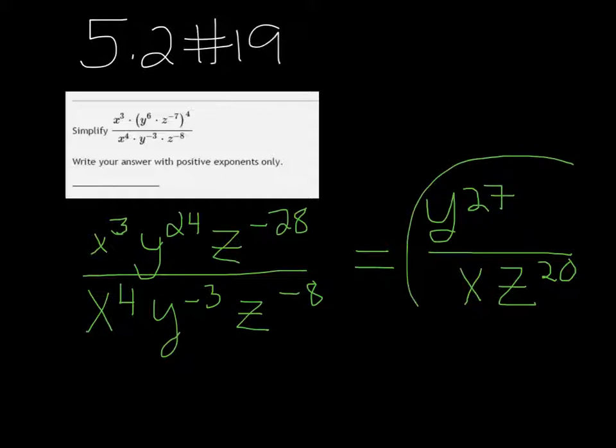So when we do it this way, all of our exponents are positive, because if they were negative, we already put them in the denominator.